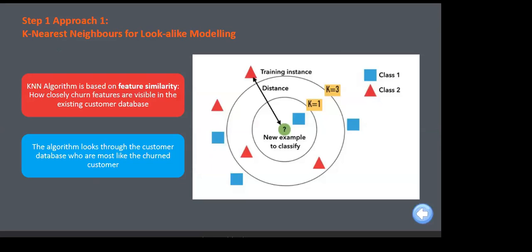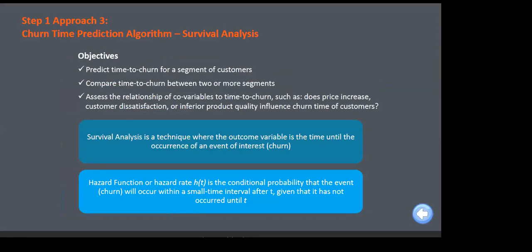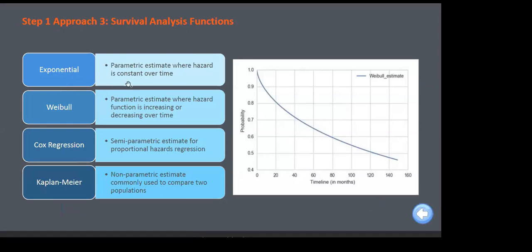For look-alike modeling using KNN, we figure out the distance metrics to predict whether a customer has a high probability of leaving. For churn scoring we use different classification techniques — two classes: customers who are with us and customers who have left. Multiple techniques are leveraged, and we compare across models using several model comparison techniques. Then the model gets compared, validated, and taken forward. Survival analysis briefly: if parametric we use the Weibull or exponential function; if semi-parametric we use Cox regression.